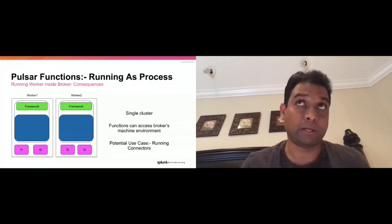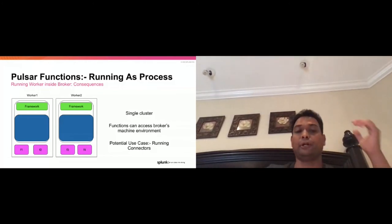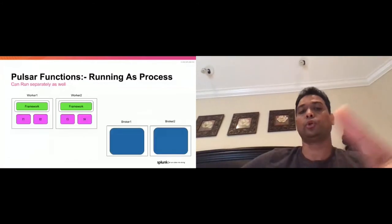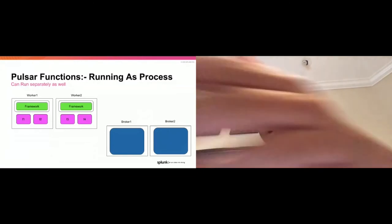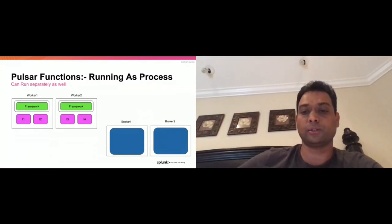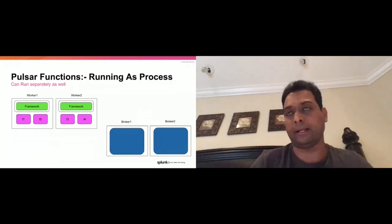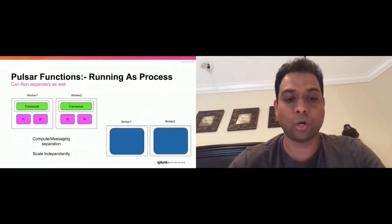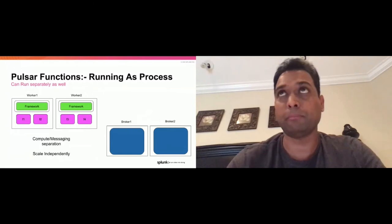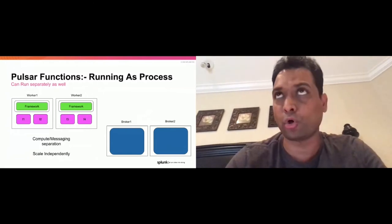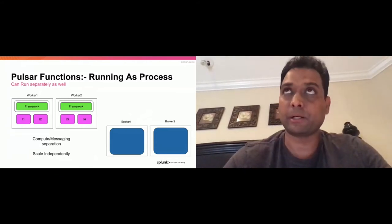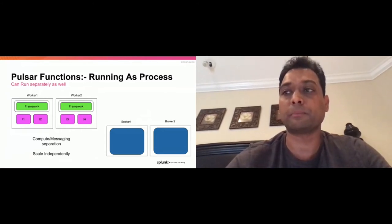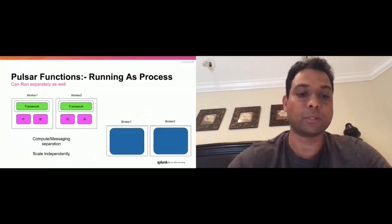You can also run them separately — having your own processing cluster defined by worker one and worker two, and your own pub-sub brokering cluster with broker one and broker two. You can scale them independently and manage them independently. All the basic niceties that apply with threading running separately similarly apply to functions running separately from the broker cluster.